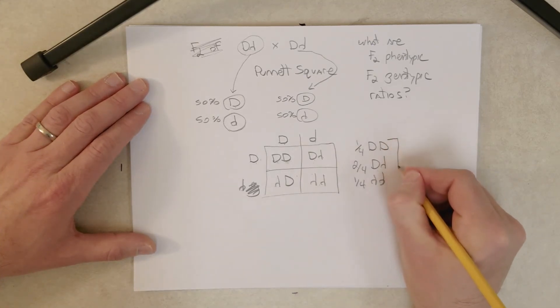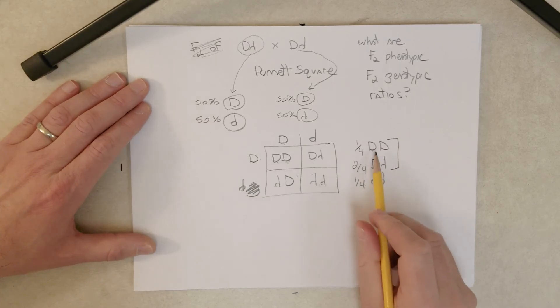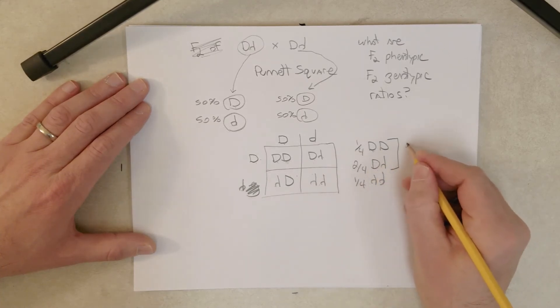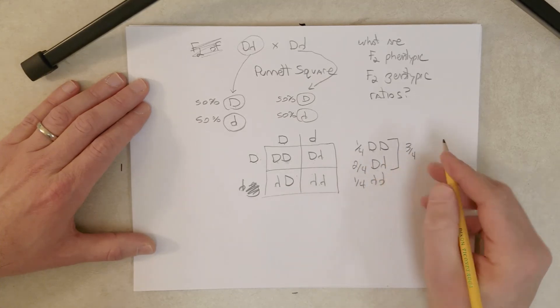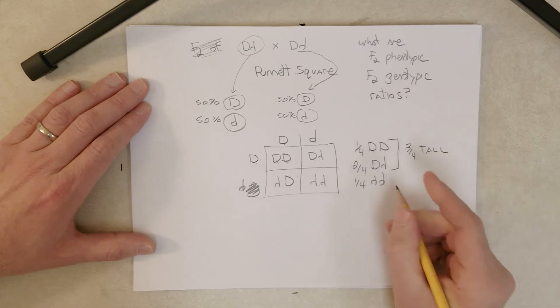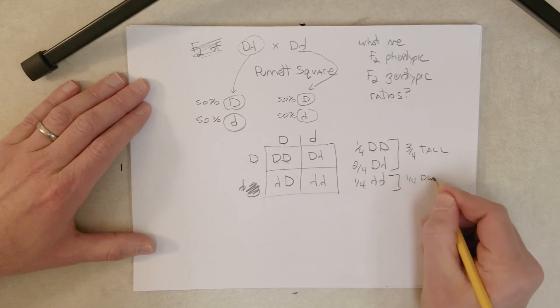Should be the homozygous recessive genotype. Now because these each have at least one dominant allele, all of those—this one quarter and these two quarters for three quarters total—will be tall, and this one quarter will be dwarf.